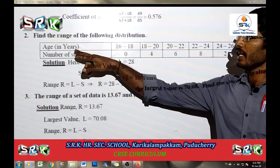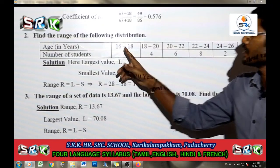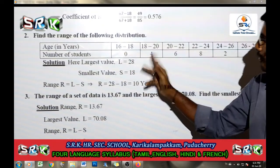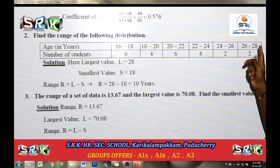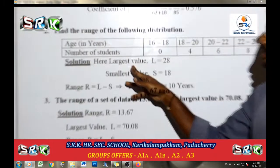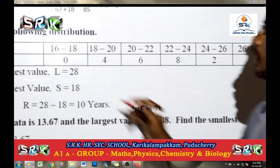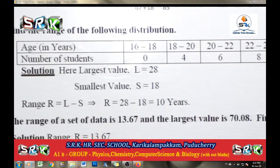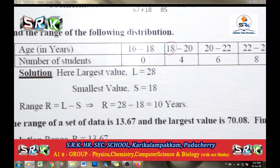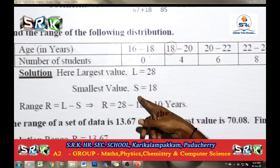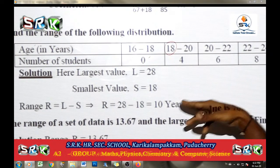Second question: find the range of the following distribution. Age in years and number of students: 16 to 18 (0 students), 18 to 20 (6 students), 22 to 24 (8 students), 24 to 26 (2 students), 26 to 28 (2 students). Largest value is 28 and smallest value is 18. Range equals L minus S equals 28 minus 18 equals 10 years.